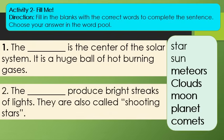Number 2. The blank produce bright streaks of lights. They are also called shooting stars.